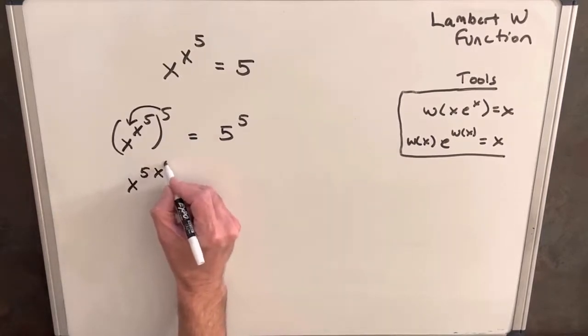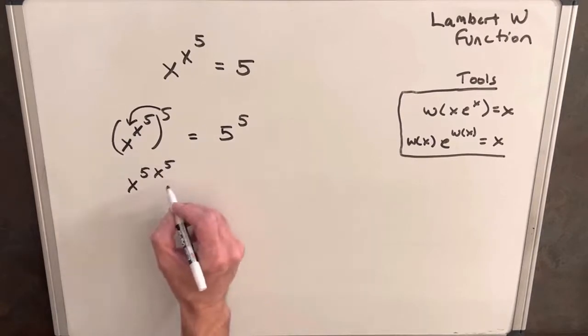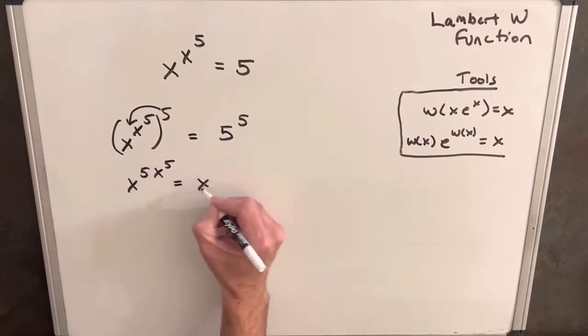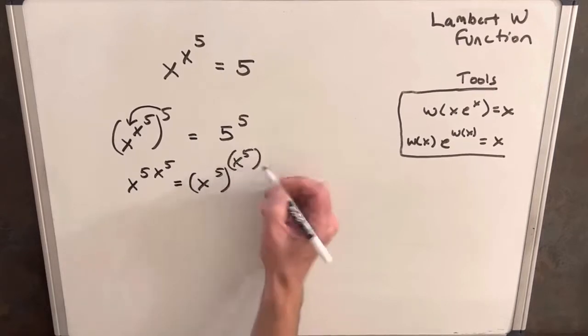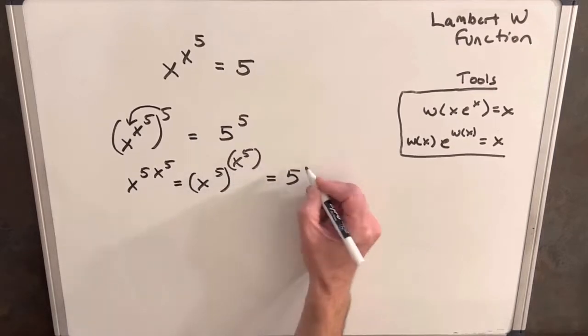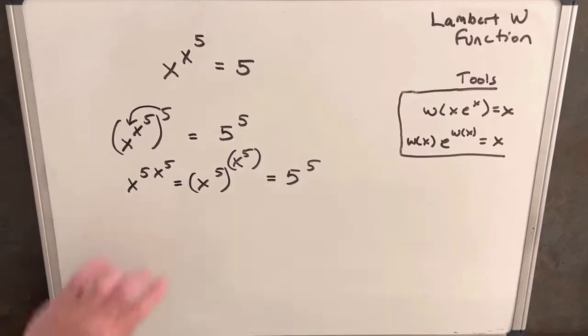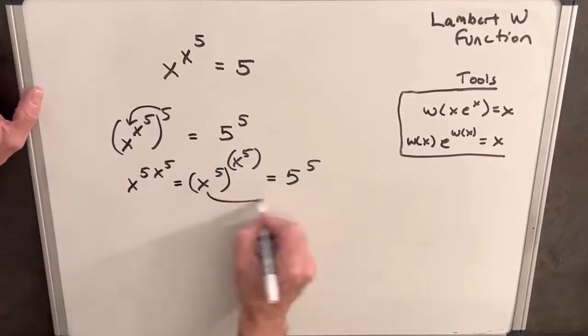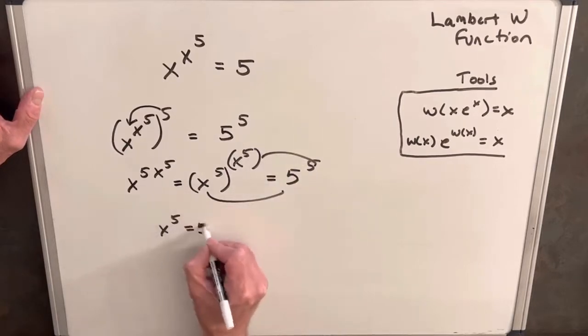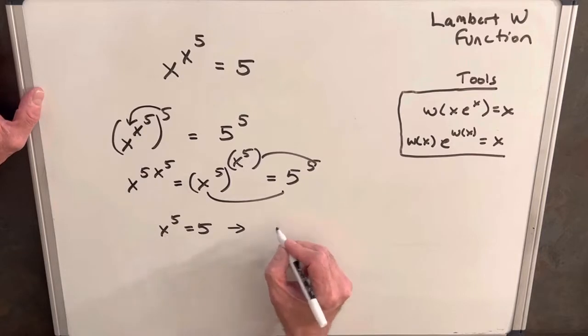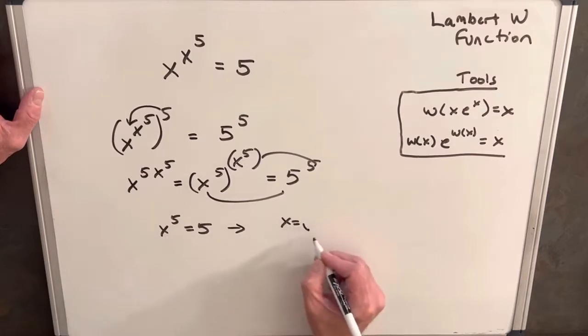So rewriting this we'll have x to the fifth x to the fifth, and then we can actually just break this up and write it as x to the fifth to x to the fifth which equals five to the fifth. And now that we have the same base and the same exponent on both sides, we can just equate base to base, exponent to exponent, and say x to the fifth equals five.